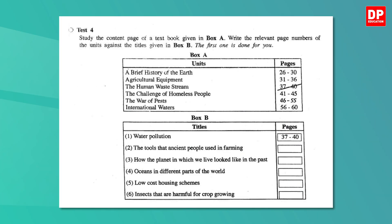Let's see what the fourth test item is now. Here you have two boxes. In Box A you have the contents page of a textbook with six units mentioned. In Box B you have some titles. You have to write the relevant page numbers of the units against the titles given in Box B. The first one is done. Pause the video and do the activity now. In this test your ability to read and extract specific information from a given text is tested. We have done several lessons to practice this skill, so I am sure you could do it easily.